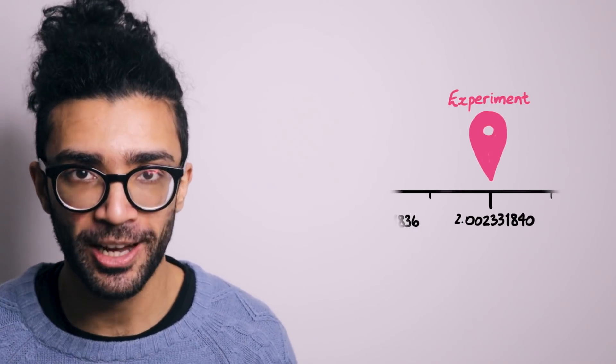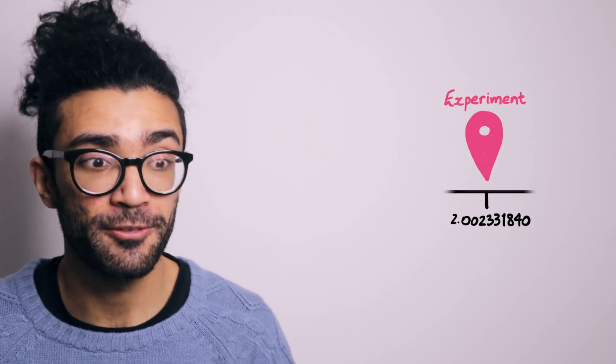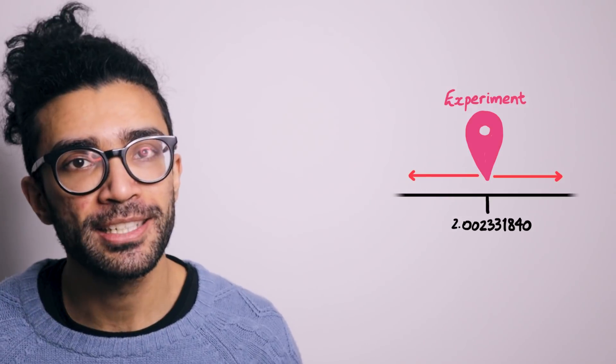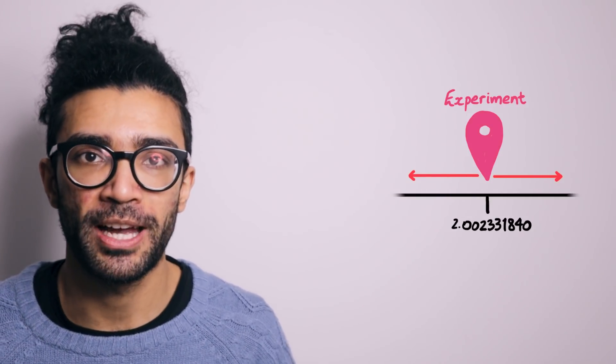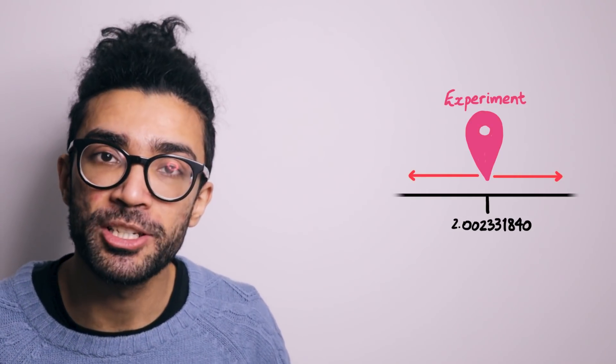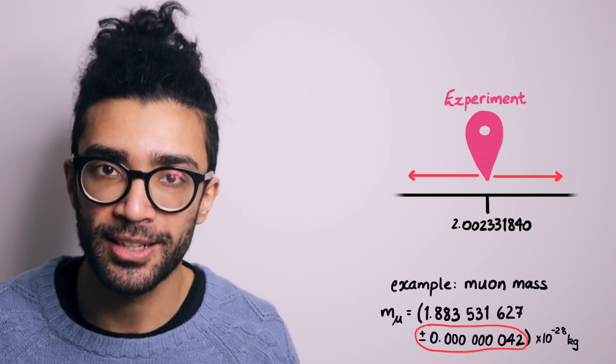Well, with every experimentally measured value, scientists also have to give a range in which this value could reasonably fall. This is calculated based on all the possible sources of error in the experiment itself, as well as any other sources of error in other experimentally measured quantities that are used in our calculations.